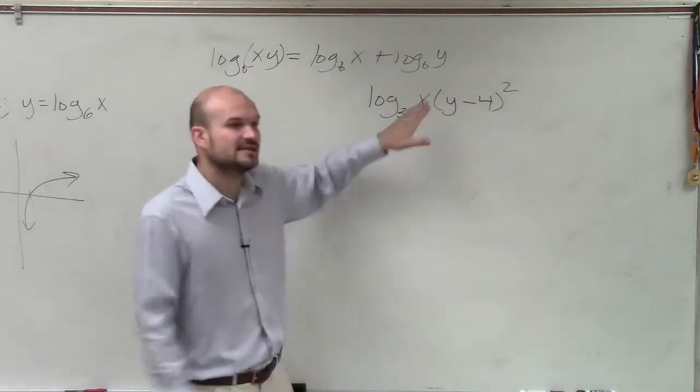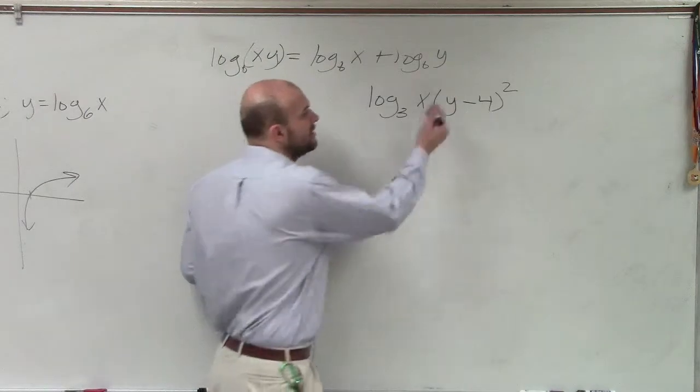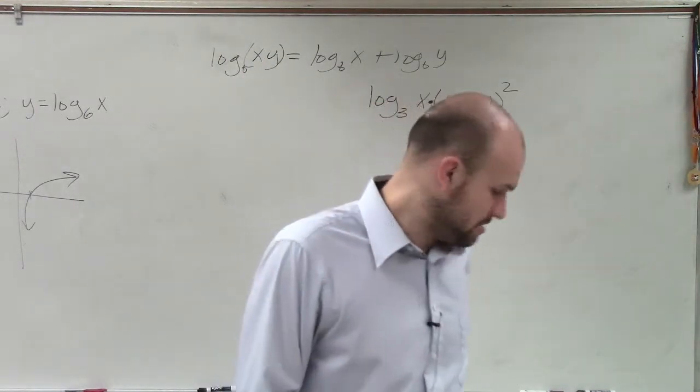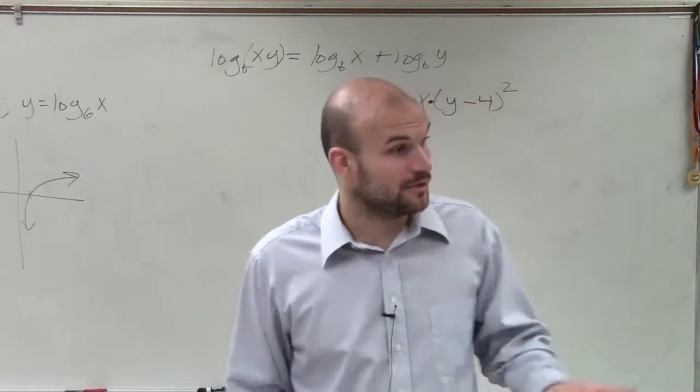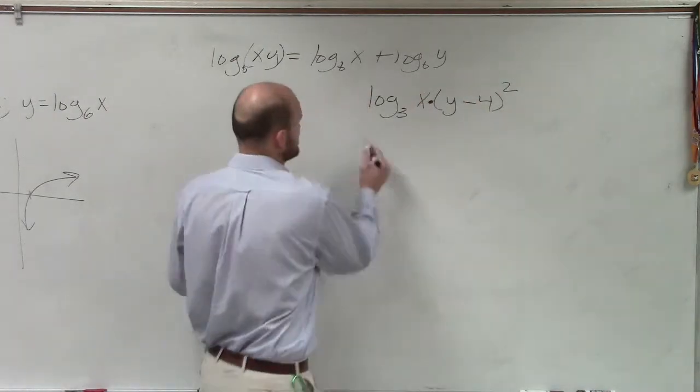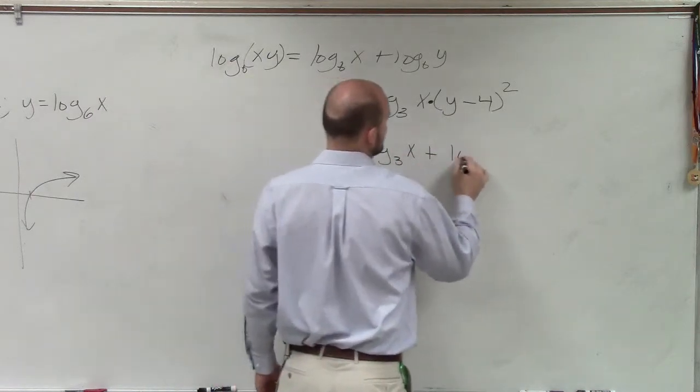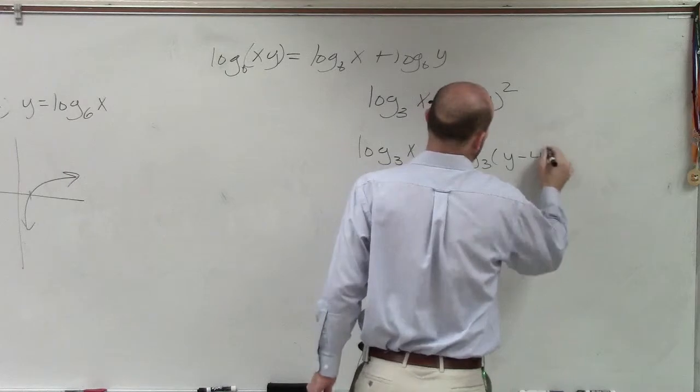So therefore, what is the product here? I'm multiplying x times the expression (y minus 4). So that's what I'm going to separate. This would be log base 3 of x plus log base 3 of (y minus 4).